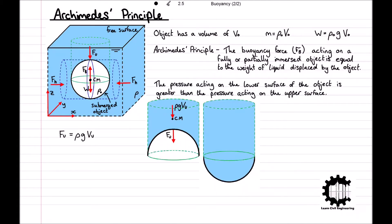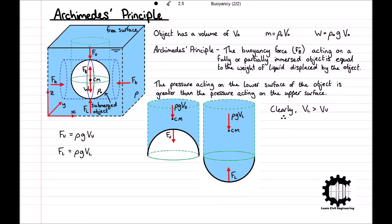Now considering the vertical pressure force acting on the lower part of the object, Fl is equal in magnitude and opposite in direction to the weight of the volume of liquid that would be directly above the lower surface of the object, and this weight acts vertically downwards through the centre of mass of this volume. Therefore, again assuming that density is constant throughout the liquid, the weight of this volume is equal to ρgVL, where VL denotes the volume of liquid between the surface of the liquid and the lower surface of the object. Therefore, the vertical pressure force acting on the lower part of the object, Fl, is equal to ρgVL. It is clear that the volume VL is greater than the volume Vu, and therefore, as ρ and g are constants, the force on the lower surface is greater than the force on the upper surface, so Fl is greater than Fu.